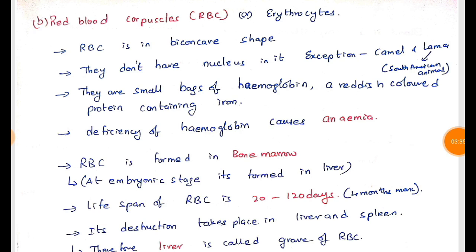The next important component in blood is red blood cells, also called erythrocytes or RBC. RBCs are biconcave in shape. They don't have a nucleus, but in camel and llama — llama being similar to camel and belonging to the camel family in South America — we can find nucleus-containing RBC cells.